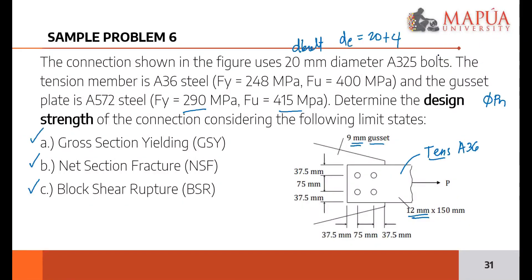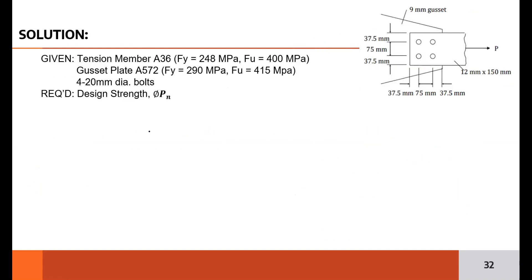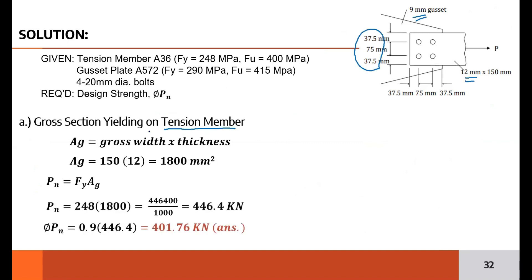Let me revisit the question. Notice the question says determine the design strength of the connection. When it says design strength of the connection, that means you check both the tension member and gusset plate. But if the problem only asks determine the design strength of the tension member, you only investigate the upper member. If it says determine the design strength of the gusset plate, you only analyze the gusset plate. But when it says connection, it involves the two members being connected, so you check them both.